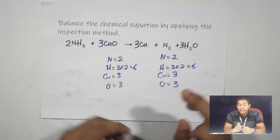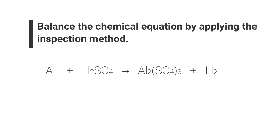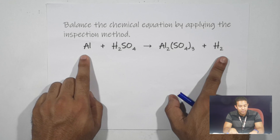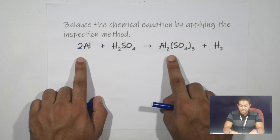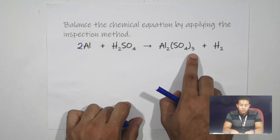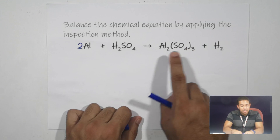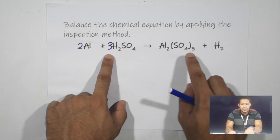I hope from this first example you can follow the step-by-step process. Now let's move on to the second example. Balance the chemical equation by applying the inspection method. We have Al (aluminium) reacting with H2SO4, and the products are aluminium sulphate Al2(SO4)3 and H2. Starting with aluminium: one on the reactant and two on the product, so we put a coefficient of 2 in front of Al. Now aluminium is balanced. Next, for sulphur — the bracket outside means we have two times the contents inside, giving three sulphur on the product and only one on the reactant. So we put 3 in front of H2SO4, giving three sulphur on both sides.